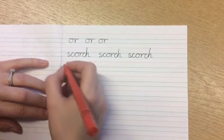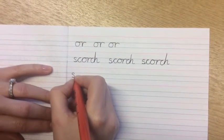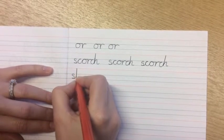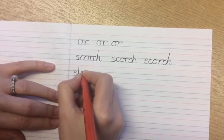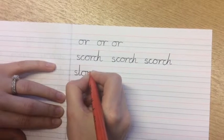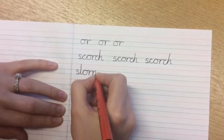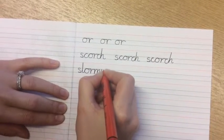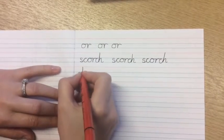Next up we're going to write 'stormy'. Start at the top of the S, round, up to the top of the S, up with the ascender, back down, curve around to the top of the O, across the top to the R, down, back up. The M is where you have to go up and down the lines you've already drawn a few times. And down to the bottom with the Y and across the T.